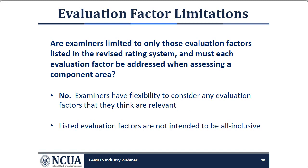Agency guidelines require examiners to discuss with senior management and, when appropriate, the board of directors, the evaluation factors used in assigning component ratings and the composite rating. Are examiners limited to only the evaluation factors listed in the revised rating system, and must each evaluation factor be addressed when assessing a component? The answer is no. Examiners have the flexibility to consider any other evaluation factor that in their judgment relates to the component under review. The evaluation factors listed under a component are not intended to be all-inclusive. Only those factors believed relevant to fully support the rating must be addressed in the report and discussions with senior management.